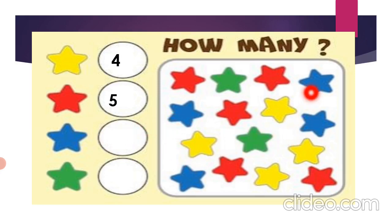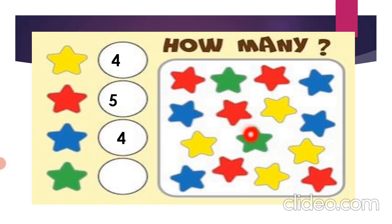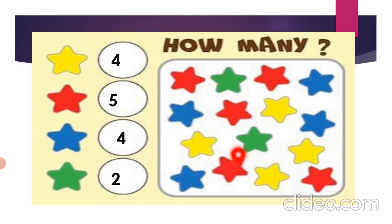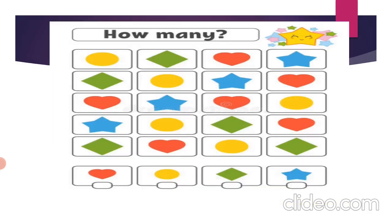And last is green star — one and two. Only two green stars are there. So students, in this way you'll have to observe carefully whatever the teacher gives you, and then you'll have to write the answers. Now next, there are some colorful shapes given. Have you all learned the shapes? Yes.